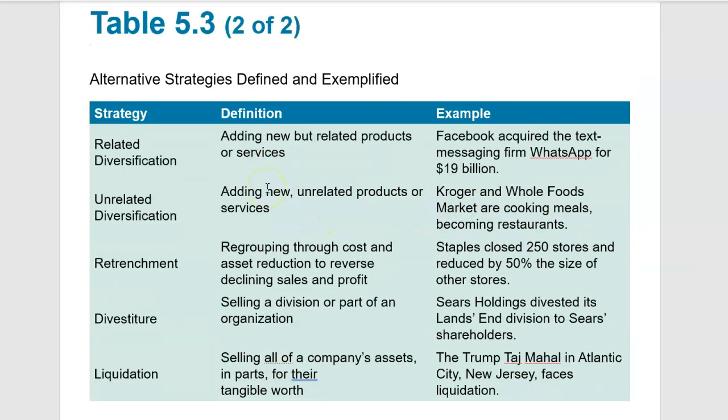Related diversification means adding new but related products or services — for example, when Facebook bought Instagram and WhatsApp, really expanding in products they think will enhance their current products. It could also be when Warner Brothers Discovery purchased Warner Brothers to extend their content and streaming platforms. Unrelated diversification is where you're buying unrelated businesses — say a fast food company buying a chain of stores that sells clothes. Sometimes this is a strategy.